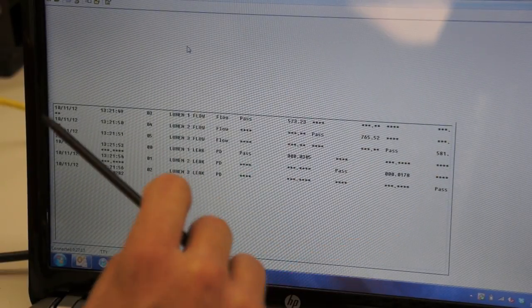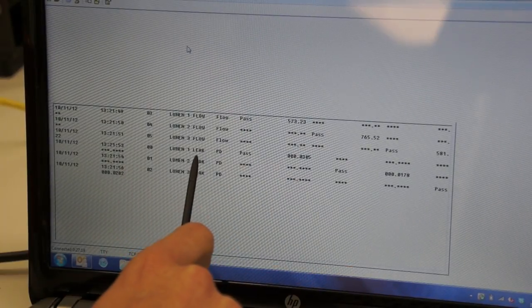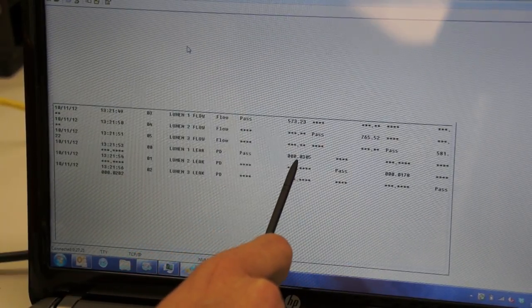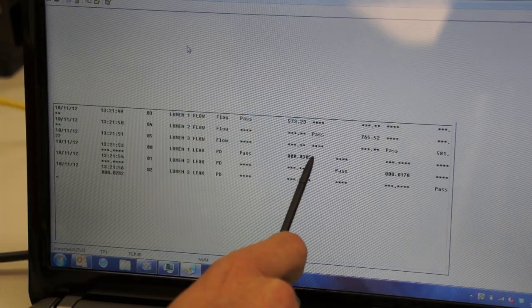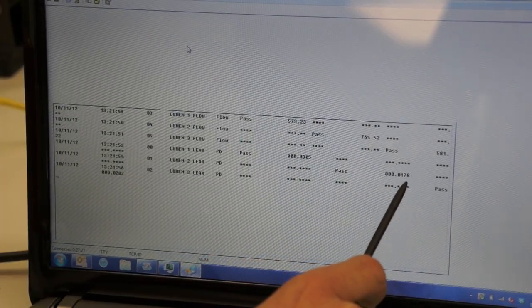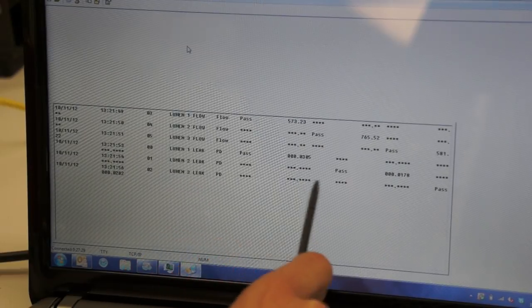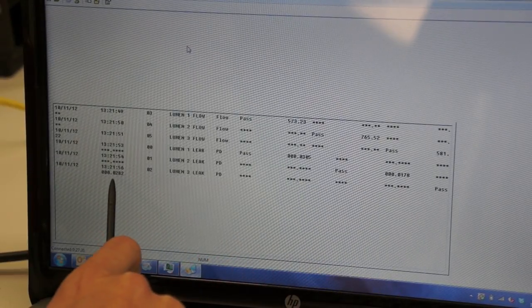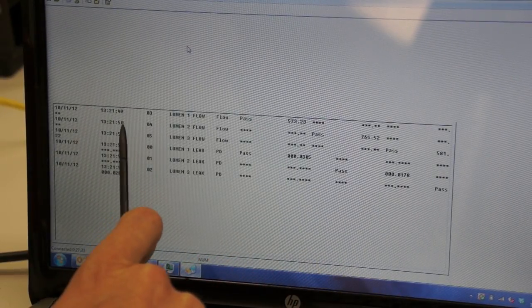Then we moved to the leak tests. Lumen 1 leak was a pass with a decay of 0.0305. Lumen 2 leak passed with 0.0178. And lumen 3 passed with 0.0282.